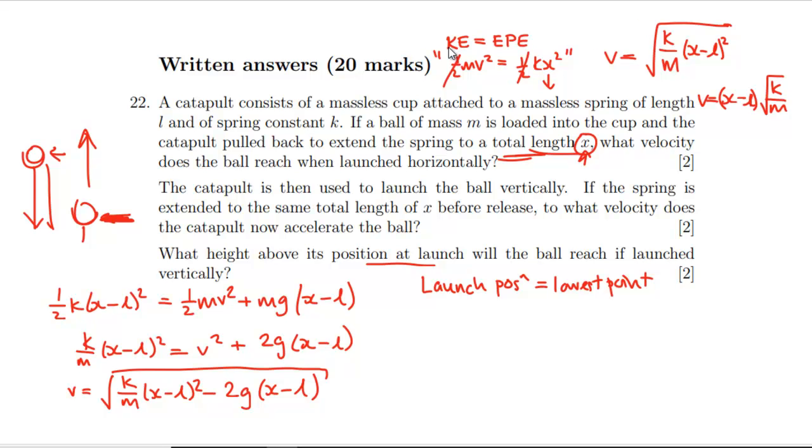What height above its position at launch will the ball reach if launched vertically? So we're going to have mgh equals ½m times all of this stuff, because this is our velocity. We need to multiply by (k/m(x-l)² minus 2g(x-l)).